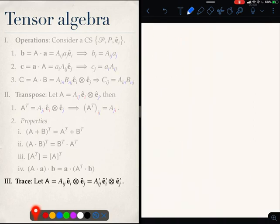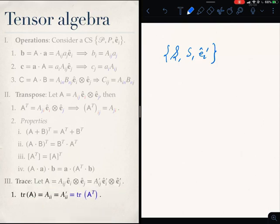One more operation that you are familiar from matrix algebra is a trace operation. And well, here is a tensor A, which I can expand in P as A_ij e_i tensor e_j. I can expand in another coordinate system S with unit vectors e_i prime and that is the expansion of A in that coordinate system. Then the trace of A is simply the sum of the diagonal elements of the matrix of A in P, which happens to be the same as the sum of diagonal elements of the matrix of A in S. And because the diagonal elements do not change when you take the transpose, so the trace of A is same as the trace of A transpose.